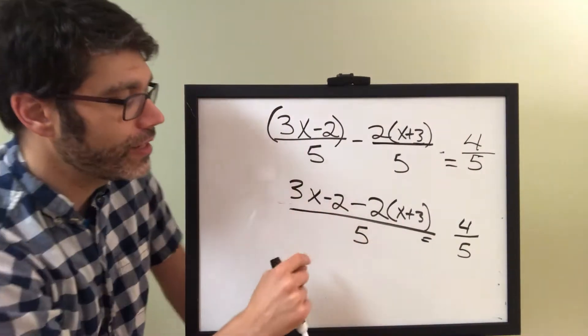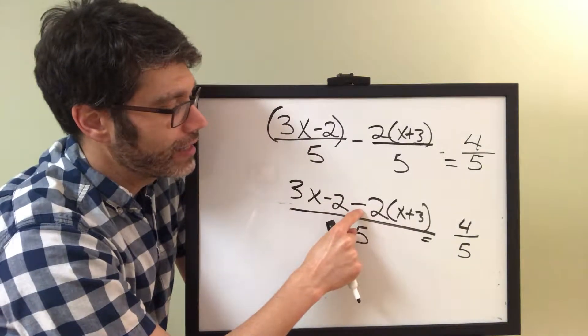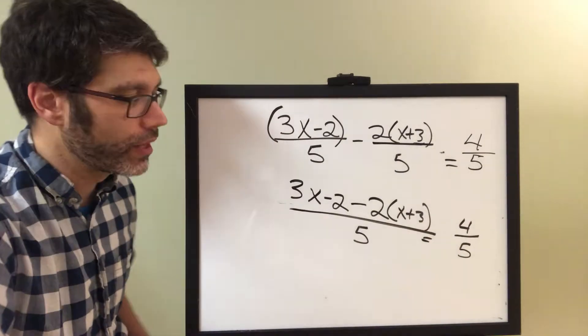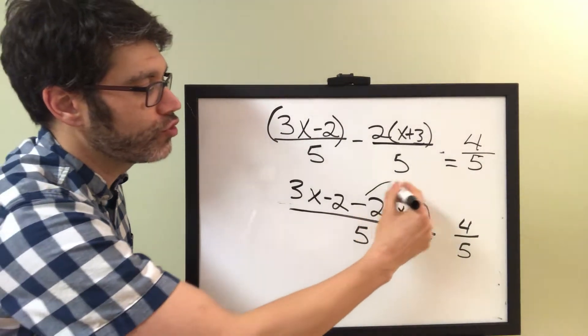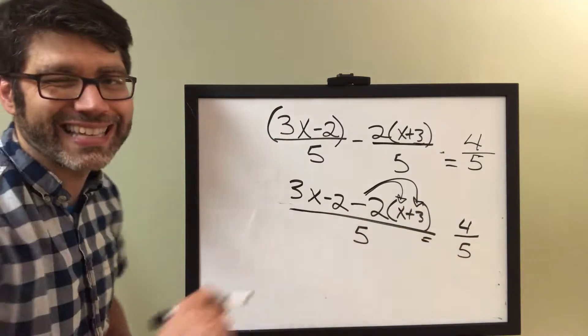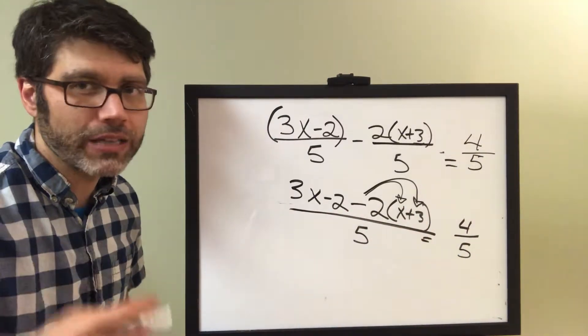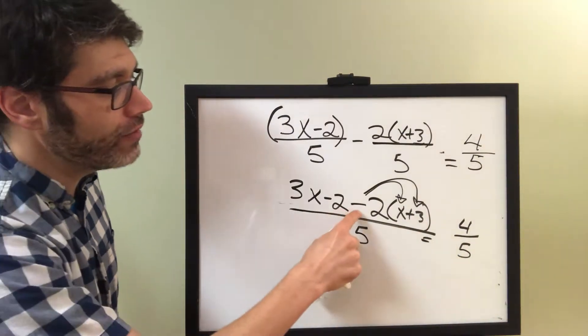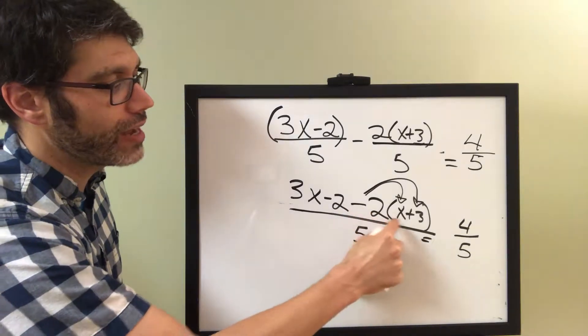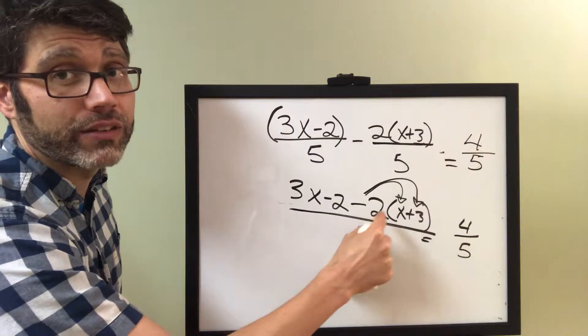The first thing that we need to do is recognize that this is a negative 2 times the quantity x plus 3. So, why don't we distribute the negative 2 over everything inside the parentheses so that we can make some like terms. Negative 2 times x is negative 2x, and negative 2 times positive 3 is negative 6.